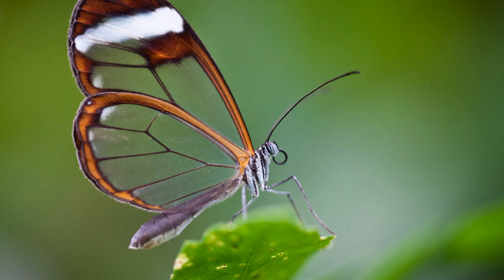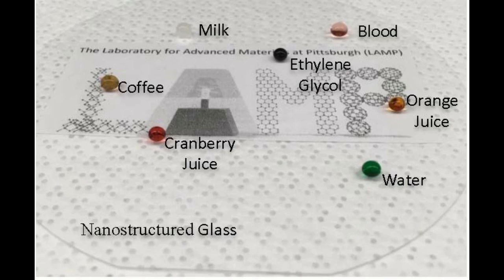The nanostructured glass has random nanostructures, like the glasswing butterfly wing, that are smaller than the wavelengths of visible light. This allows the glass to have a very high transparency of 99.5% when the random nanostructures are on both sides of the glass. This high transparency can reduce the brightness and power demands on displays that could extend battery life.